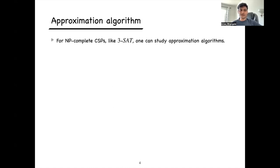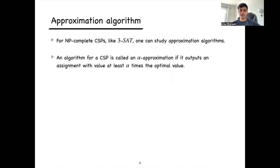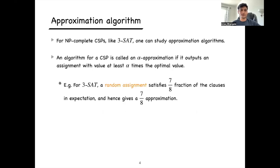For NP-complete CSPs like 3SAT, we can't hope to find an actual satisfying assignment in polynomial time, so we study approximation algorithms. An algorithm is called an alpha-approximation if it outputs an assignment with value at least alpha times the optimal value. For example, for 3SAT, if you just pick a random assignment, it satisfies 7/8 of the clauses in expectation, giving a 7/8-approximation for max 3SAT.